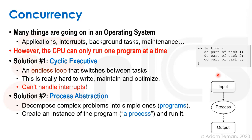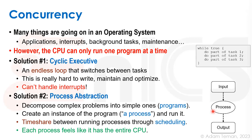With the process abstraction, we decompose complex problems into simple programs and then create an instance of a program called a process and run it. A process takes input, runs, and produces output. We timeshare between running processes through an operation called scheduling, and each process feels like it has the entire CPU. We keep loading different programs onto the CPU and run them as processes in their own time slots.